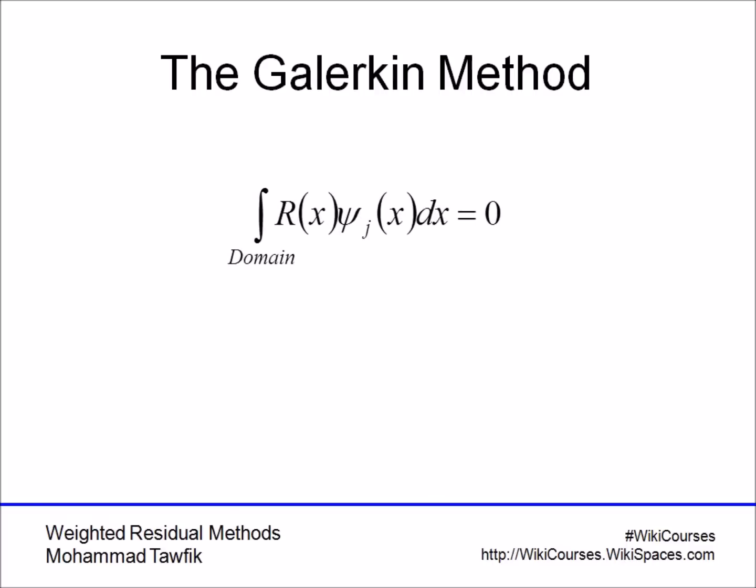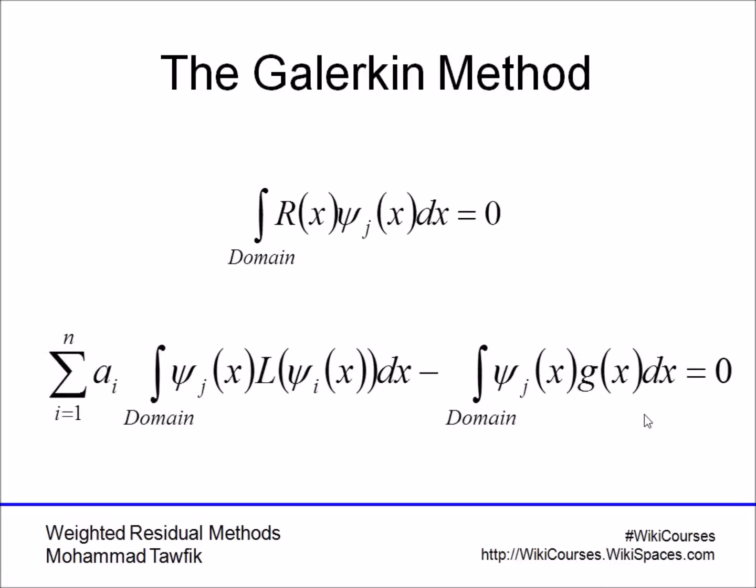So now, the Galerkin method proposes that we integrate over the domain, integrate the residue, multiplied by the proposed or the approximate solution ψ_j, and performing this n times, we already have n ψ_j's, and force the integrand to be equal to 0. This will result in a set of equations.